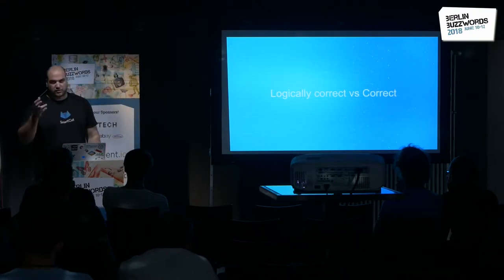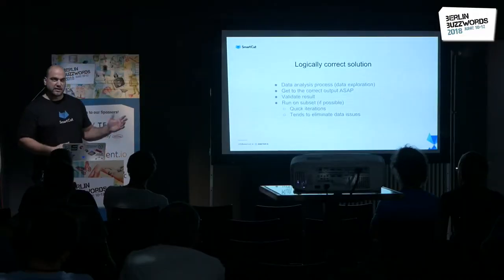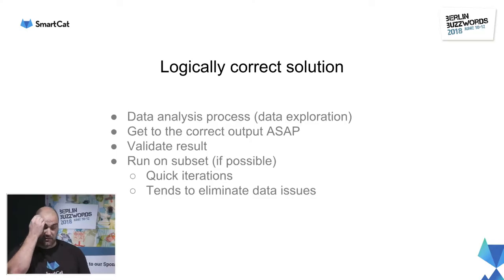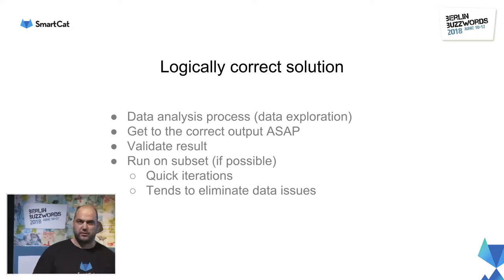If you get to 40 million entities in the output by multiplying each entity on each level, that gives a huge number Spark couldn't handle at all. A logically correct implementation is basically a solution that gets you through the data analysis and data exploration phases. The idea is to get the correct output as soon as possible, and running this on a subset was good for quick iteration — but running on a subset tends to eliminate any kind of data issue, so you don't have to worry about that.